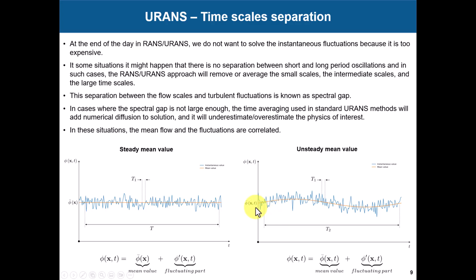You have your instantaneous fluctuations, you apply your technique, remove and model that, and below that you will have the orange line — the mean value — and look: it is oscillating in time. That is what we see in URANS. In URANS we are not going to see the instantaneous fluctuation — remember, that is modeled. You are getting the mean value. And it is very important that in URANS, in order to capture that, you need to have a separation between small and large time scales — known as the spectral gap.